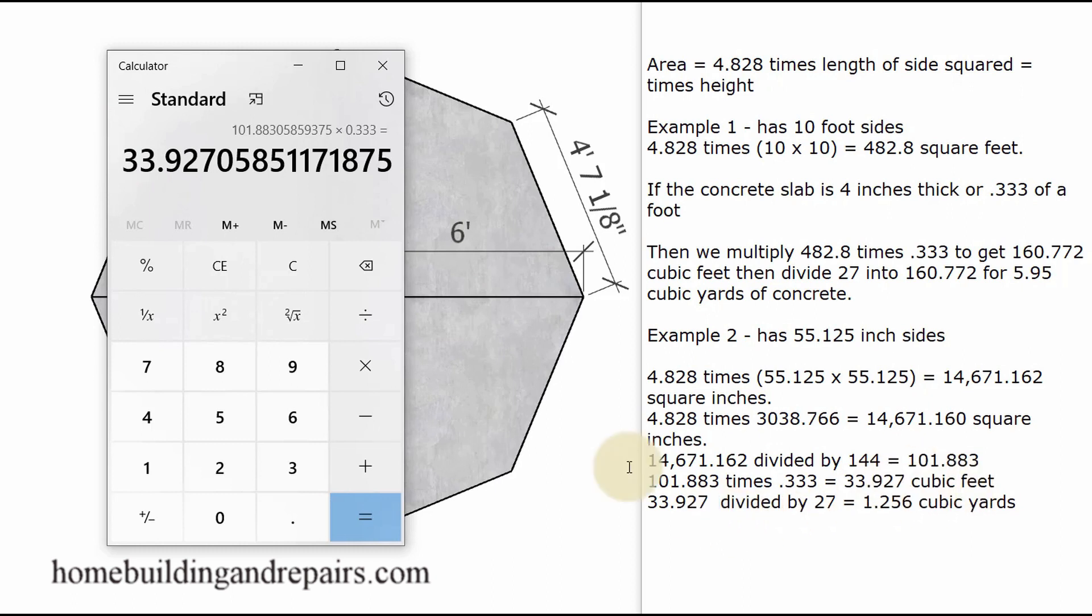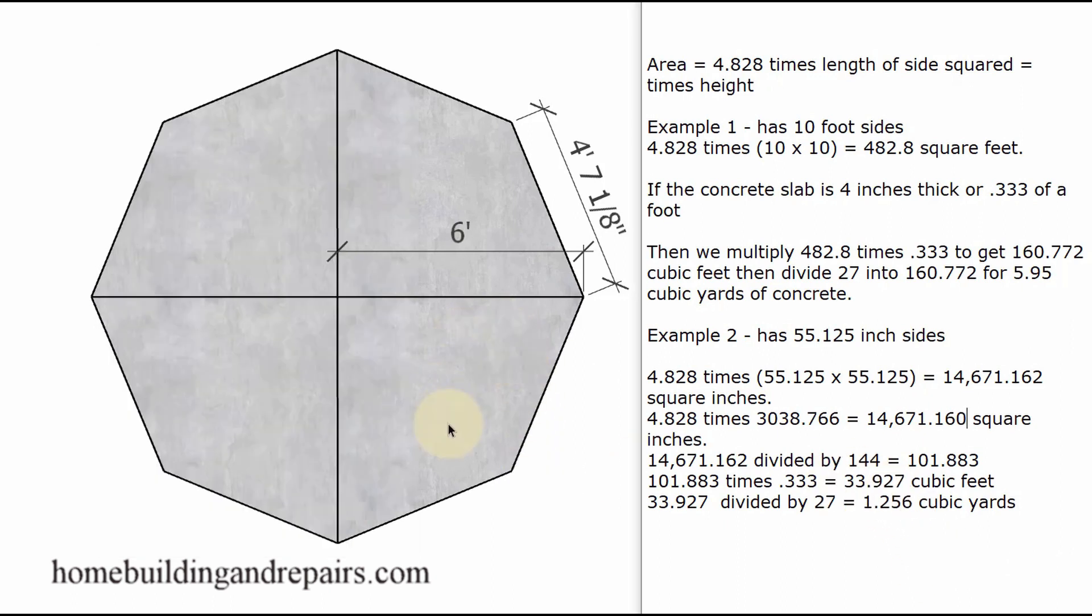So now we have the cubic feet. We can divide this number by 27 to get 1.256 cubic yards of concrete. That's how much concrete it will take to pour a 4-inch thick octagon-shaped concrete slab with a 4'7 and an 1⁄8 inch side.